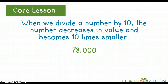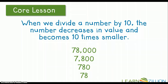Let's take a look at the number 78,000. If we divide 78,000 by 10, we get 7,800 — we just take away one zero. If we divide 7,800 by 10, we get 780, taking away another zero so we're left with one zero. If we divide 780 by 10, we get 78, and then we are left with no zeros to take away.